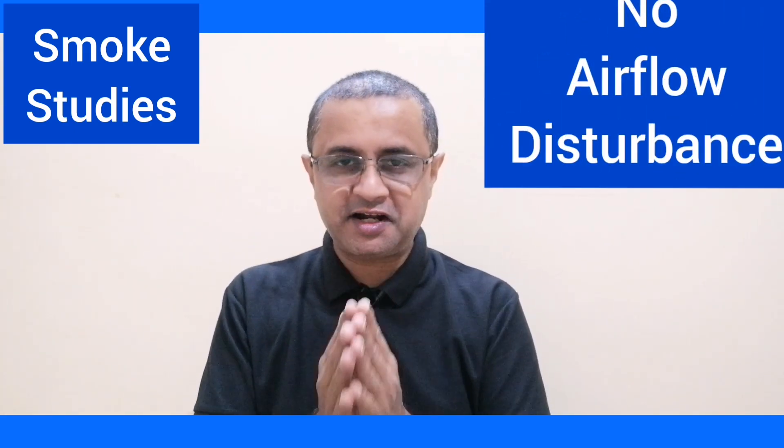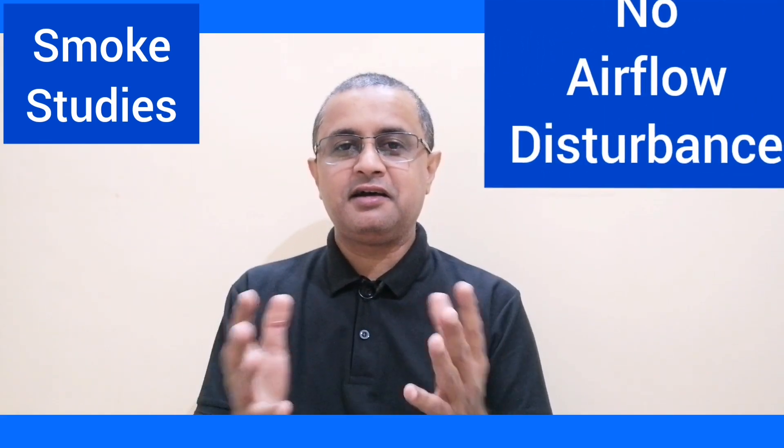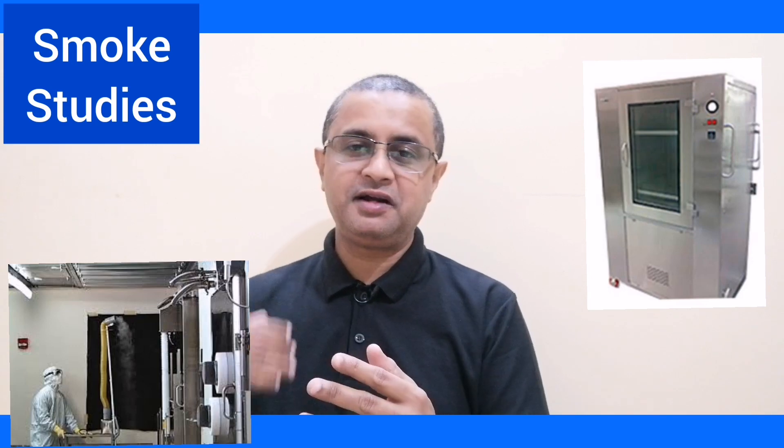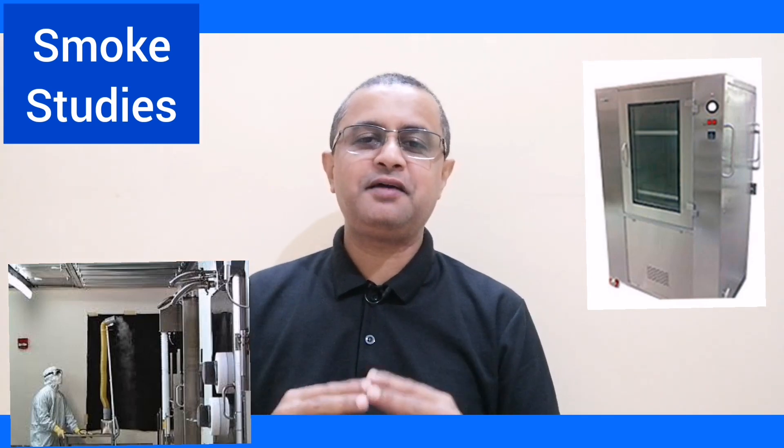Whenever we are transferring material from Grade B to Grade A — before our filling assembly — we have to demonstrate through smoke study that while transferring the material we open the filling machine doors, and even if it is an isolator we have to open the door to transfer the material inside. It must be ensured that the airflow from the filling machine is going outside to the Grade B or Grade C surrounding area, and not from the outside area to inside.